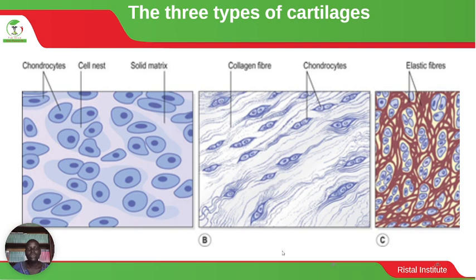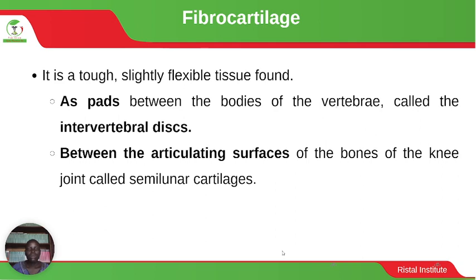Fibrocartilage is a tough, slightly flexible tissue. It can be found as the intervertebral discs between the bodies of the vertebrae — the bones that form the vertebral column. It is also found between the articulating surfaces of the bones of the knee joint, called the semilunar cartilages.